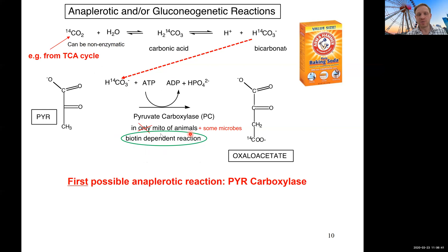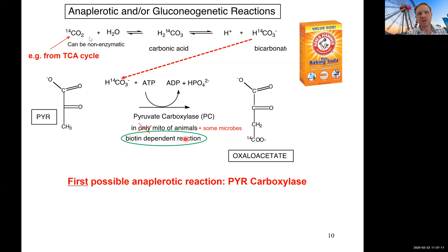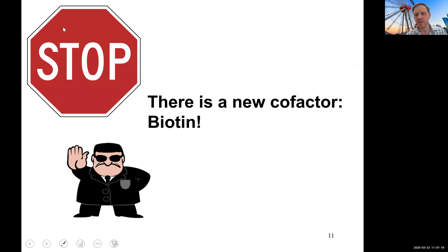Before going there, just to highlight that pyruvate carboxylase was thought to be only present in the mitochondria of animals. More recent research shows that some microbes are also capable of catalyzing this reaction using a related enzyme. But now let's look at biotin. Biotin is a critical cofactor that allows us to incorporate bicarbonate coming from carbon dioxide into pyruvate to make OAA. Watch out — there's a separate video on biotin where you can also recap all your knowledge on cofactors.